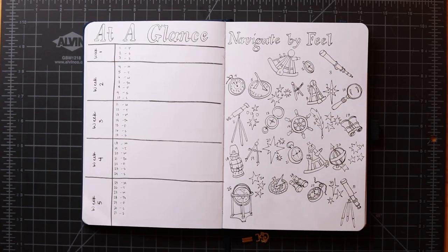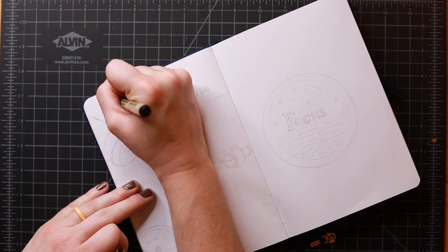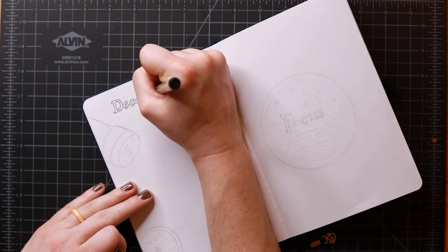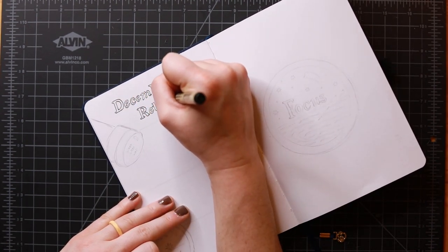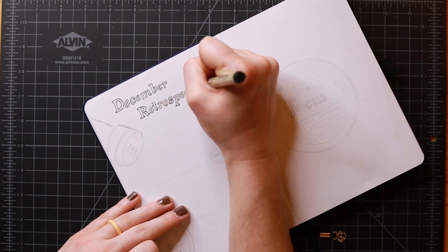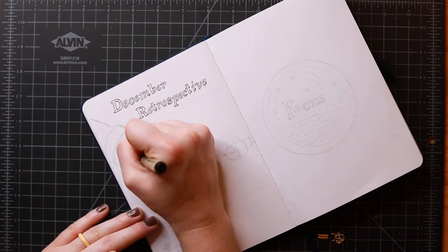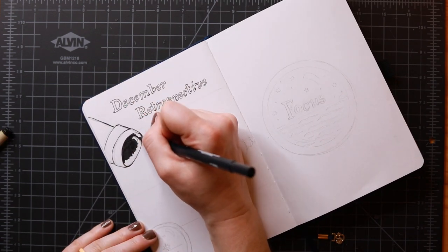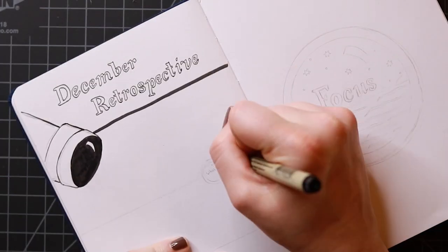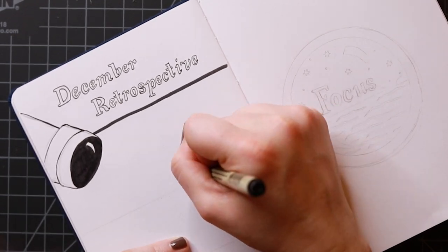And then erase all the pencils and flip on over. And I am ready to set up my December retrospective. So the retrospective is something that I do every month. Essentially you're going to look back on the previous month and it's pretty simple. There are just three questions. It's what went well, what didn't go well and how to improve.